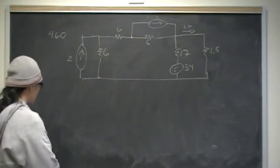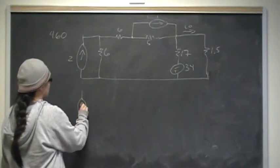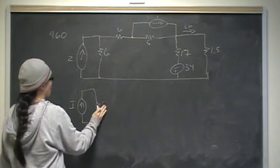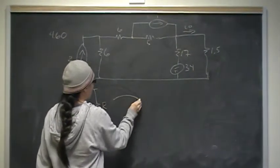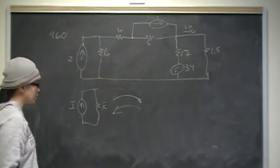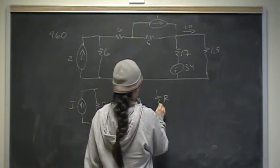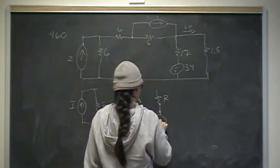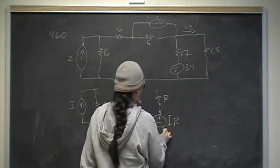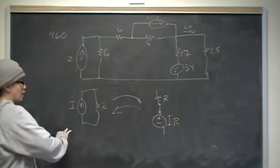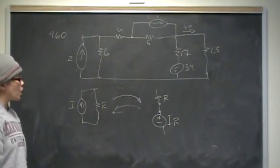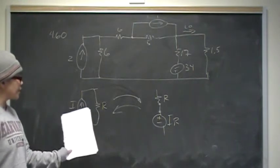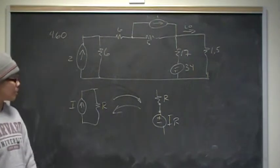Source transformation says that if you have a current source I connected in parallel with some resistance R, these are equivalent to that same R connected in series with a voltage source of value IR. You can toggle back and forth between the two — use whichever helps you arrive at your answer, because they are equivalent. A current in parallel with a resistor is the same as a voltage in series with that same resistor.